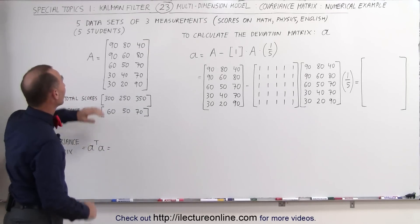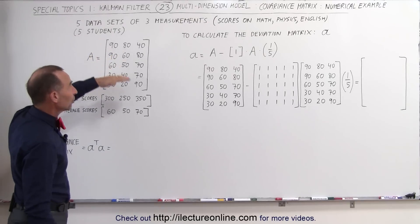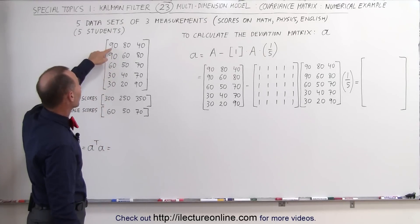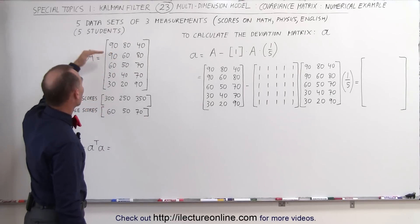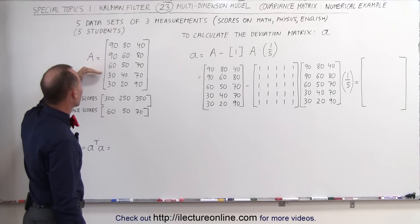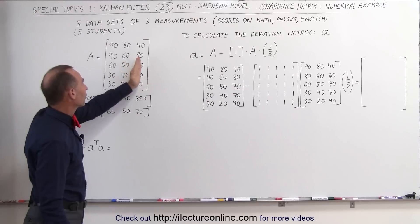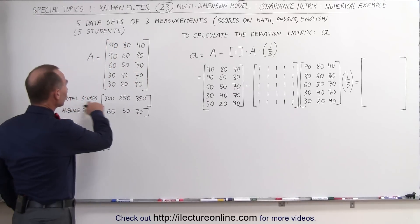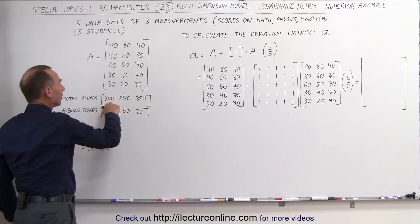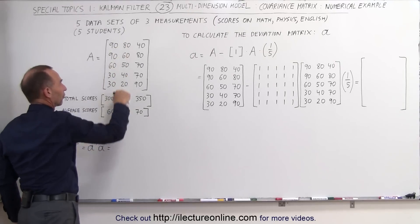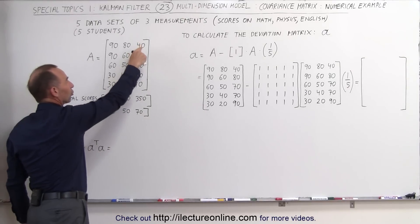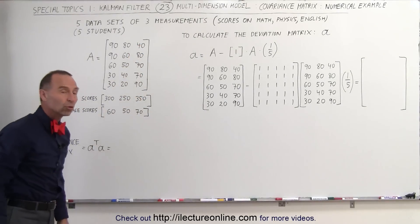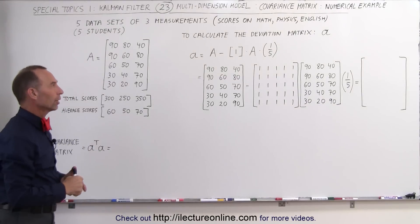In this case, we're going to have five data sets of three measurements. It's going to be the scores of some students — how they scored on math, on physics, and on English. Notice there are five students and three sets of scores: math, physics, and English. The total scores for math would be 300, for physics 250, for English 350, and then we have the average or mean scores of all five students in each of the three categories.